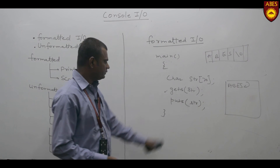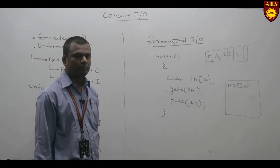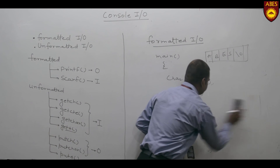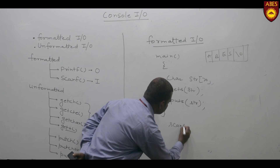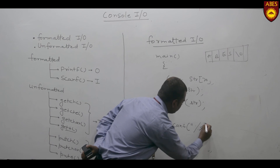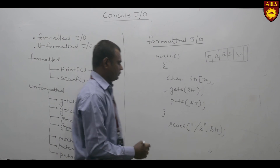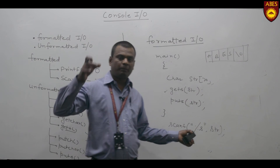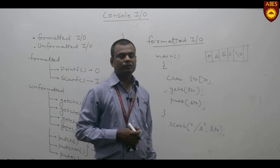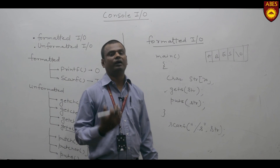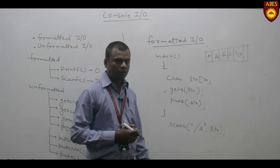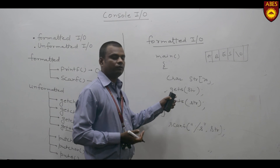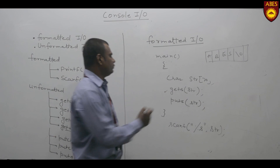When we perform the same procedure through scanf or printf, the basic difference is that scanf is also used to read a string, but when we use scanf, a space is treated as a stop delimiter. So when we try to read multiple words using scanf, it is not possible. If we want to read multiple words, it can only be done through the gets function.